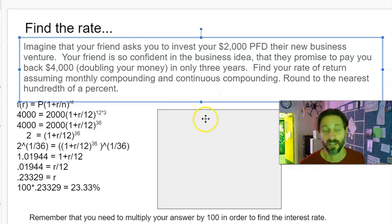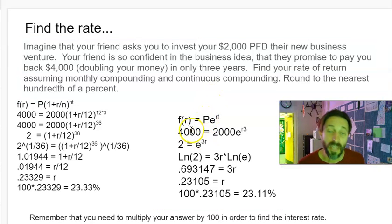In continuous compounding you're using Pe^rt. Again, 4000 = 2000e^(rt), divide both sides by 2000—there's the big doubling again—2 = e^(3r). Take the natural log of both sides.